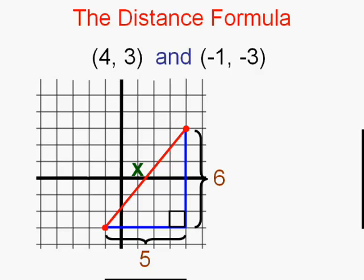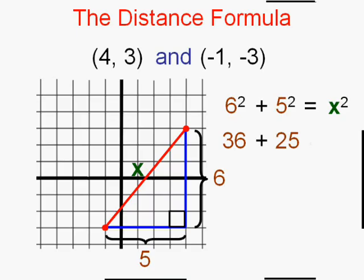Which means we can use the Pythagorean theorem. You may remember is six squared, one leg squared, plus five squared, the other leg squared, equals, doesn't equal the hypotenuse, equals the hypotenuse squared. Now we can calculate what these numbers are. Six squared is 36. Five squared is 25. And they're supposed to add up to x squared. Well they do add up to 61.